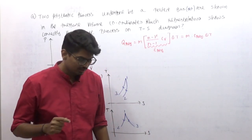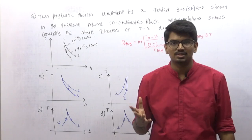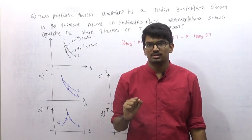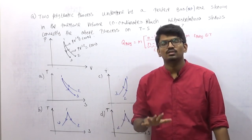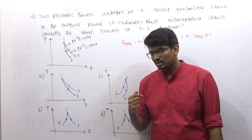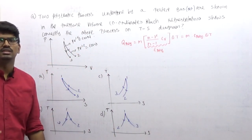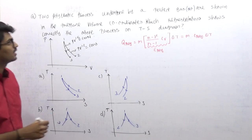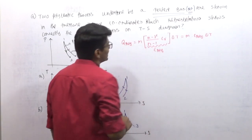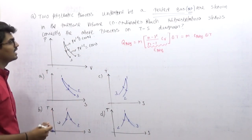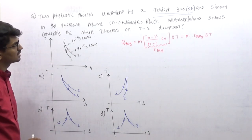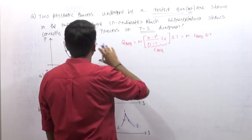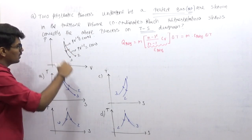This video is an extract from our full video course. This problem is actually a very good concept — we are going to learn how to draw a TS diagram from a PV diagram for a polytropic process. This problem will clear all your doubts regarding the conversion of PV diagram into TS diagram. Two polytropic processes undergone by a perfect gas — air, which is an ideal gas — are shown in the pressure-volume coordinates. Which representation shows correctly the above processes on a TS diagram?